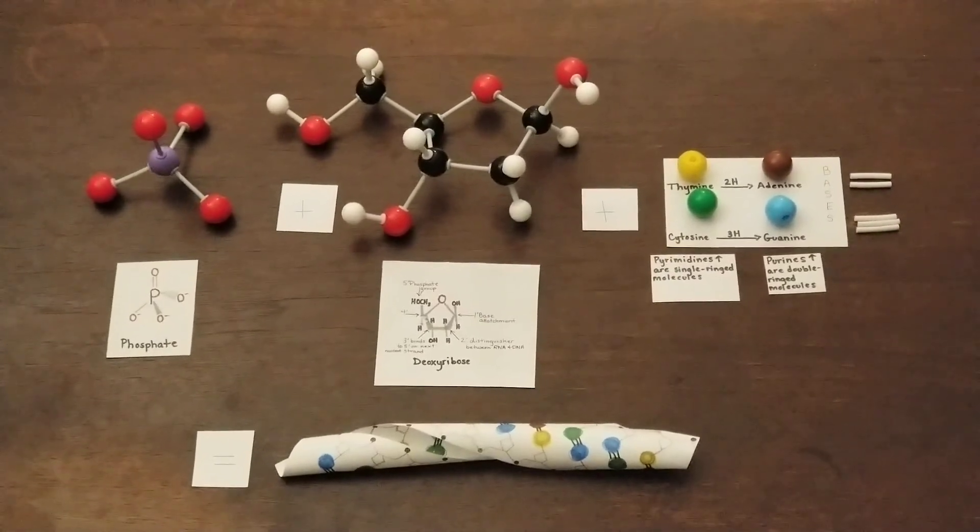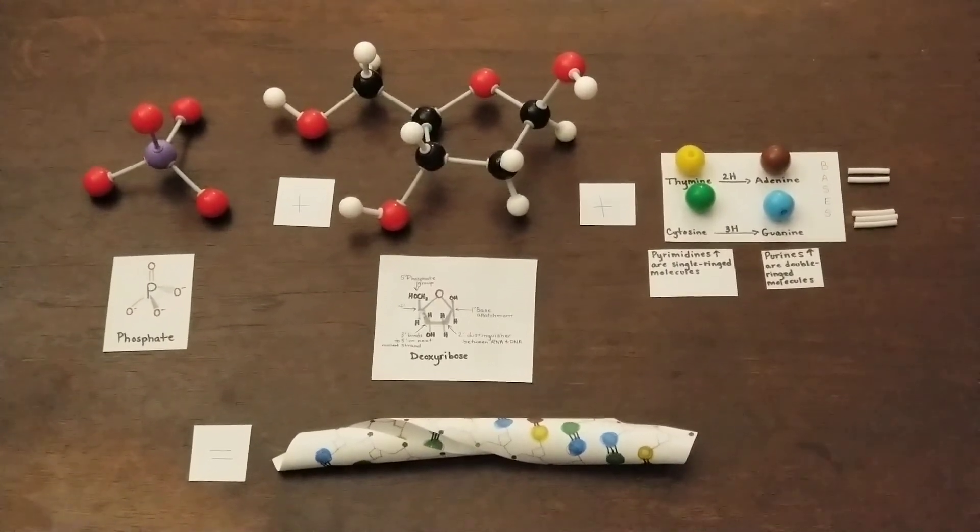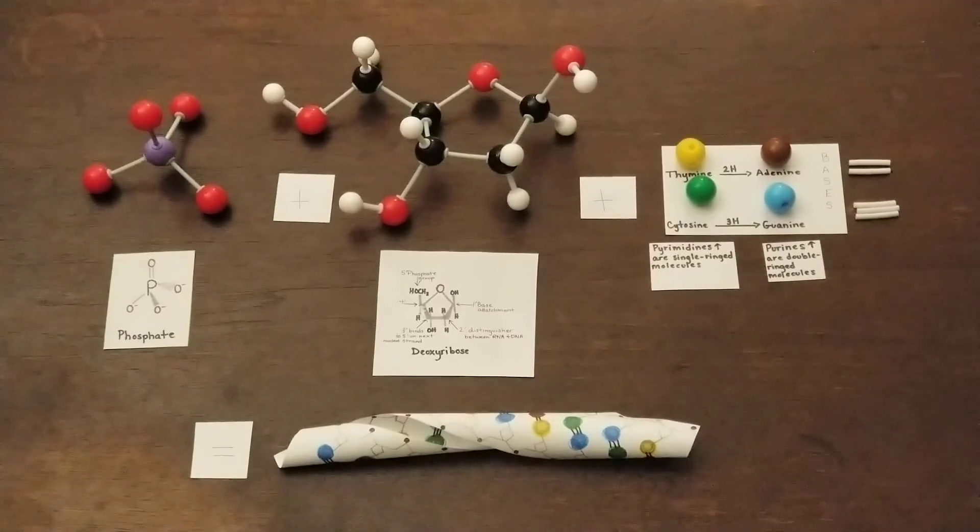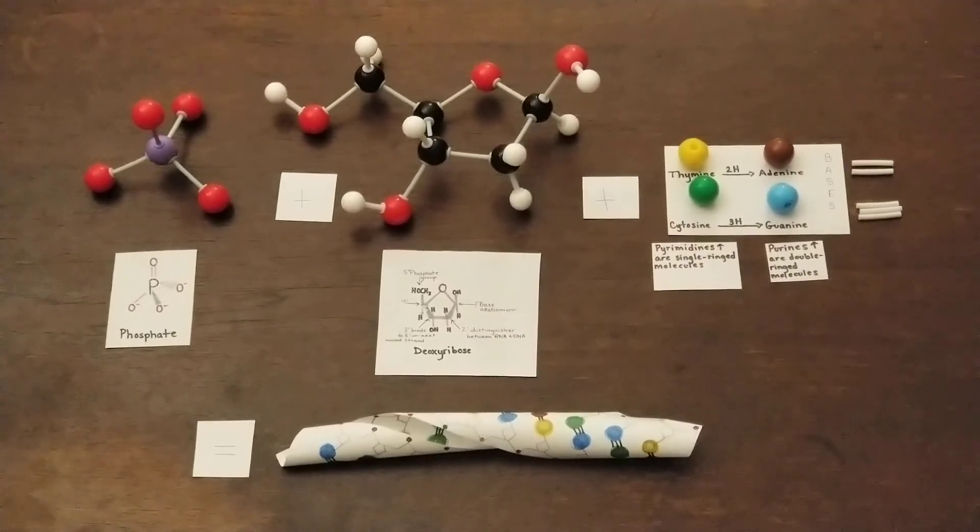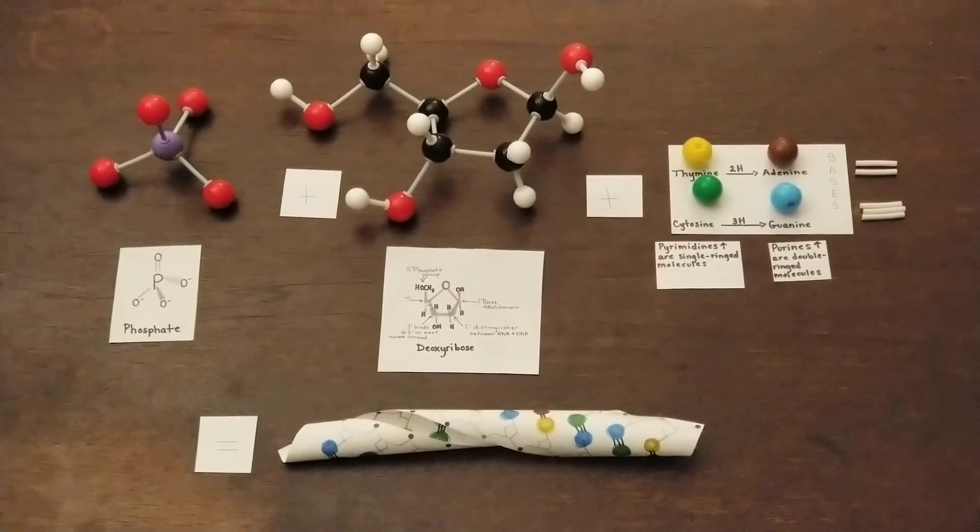We will be discussing the Watson and Crick model for DNA, which is a right-handed, double-stranded helix, both strands complementary and running in the opposite direction, making them anti-parallel.